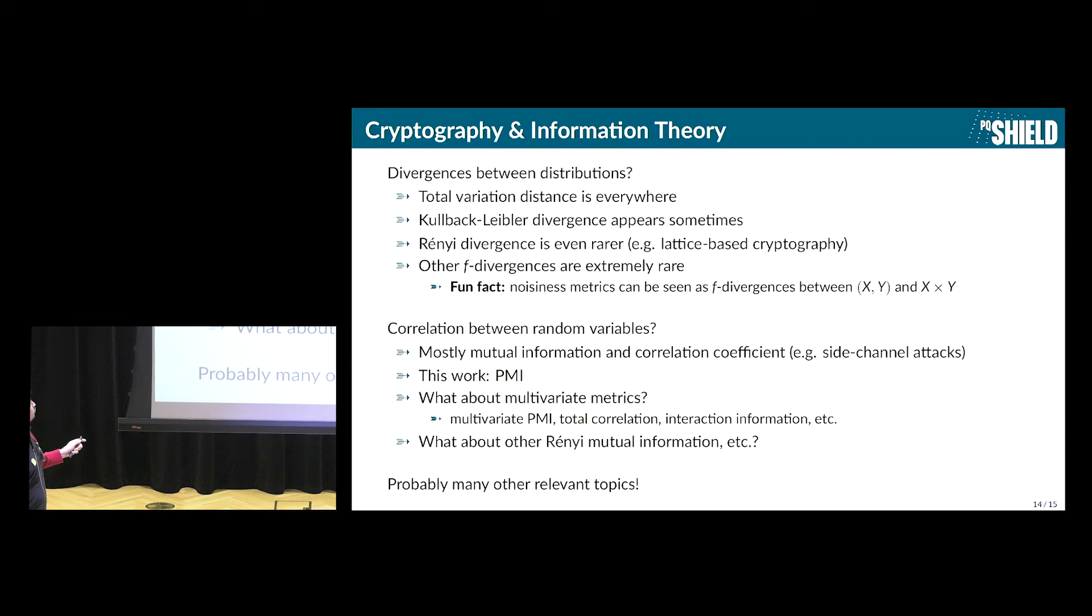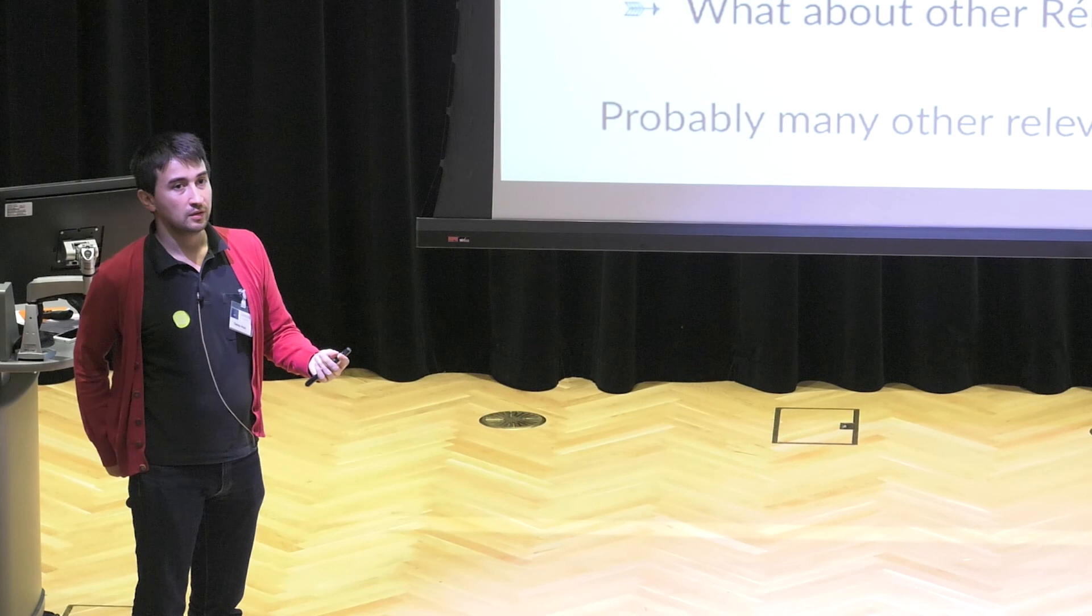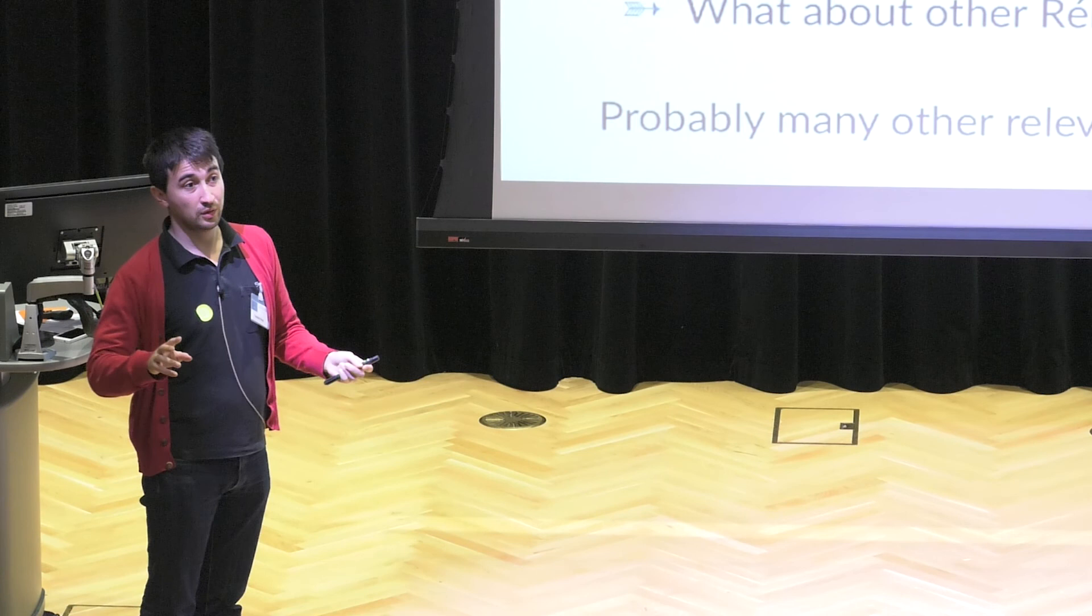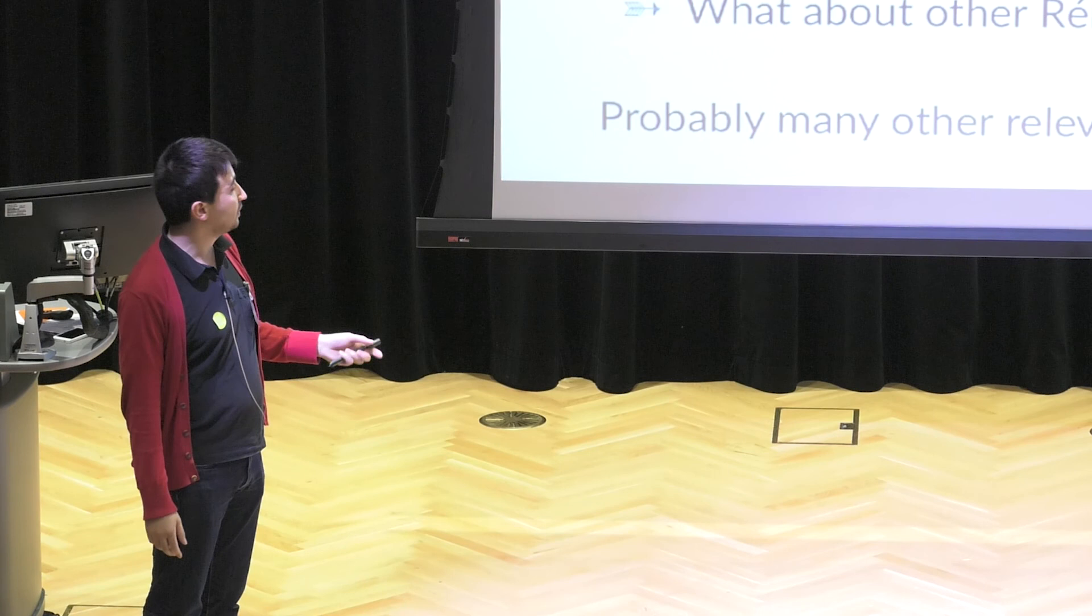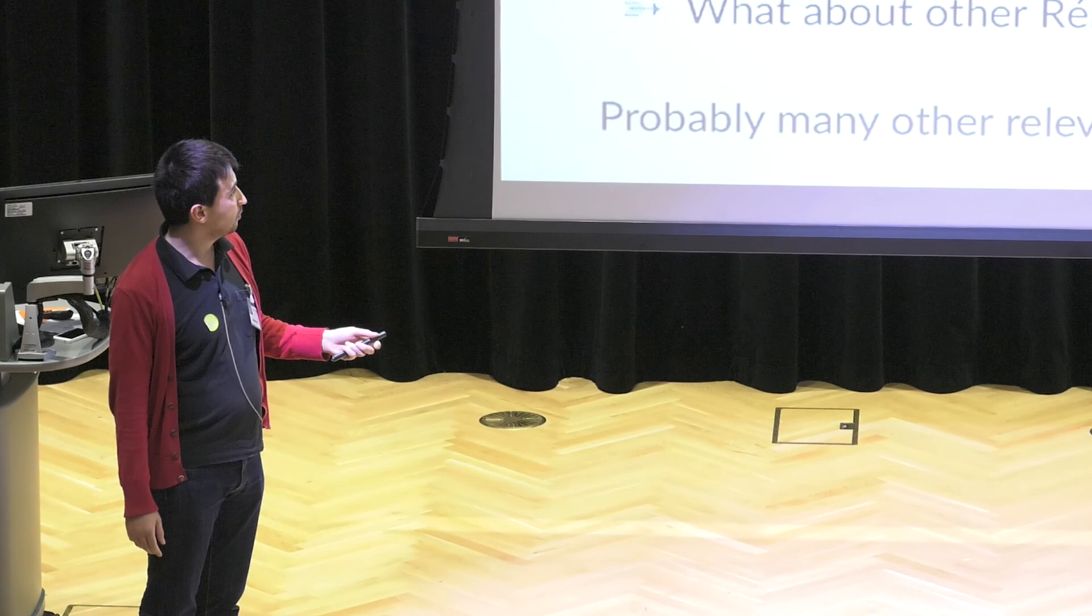So something really interesting about cryptography is that we do use a few tools from information theory, but we usually always use the same tools, which is a very restricted set of tools. So for divergences between distributions, the total variation distance is everywhere. Kullback-Leibler divergence, we use it sometimes, but not a lot. The Rényi divergence, it's even rarer. It's used mostly in lattice-based cryptography. And other f-divergences are extremely rare. And so maybe there is some interesting work to do by using specific f-divergences instead of always the three same. And also when it comes to measuring the correlation between random variables, mostly the mutual information and Pearson's correlation coefficient are used, in particular in side-channel attacks. In this work, we use the pointwise mutual information. And maybe so these tools are for only two variables. And so if we want multivariate metrics, what happens? So maybe we can use the multivariate PMI by Van de Cruys, or the total correlation by, I think it's Watanabe, and the interaction information by McGill.